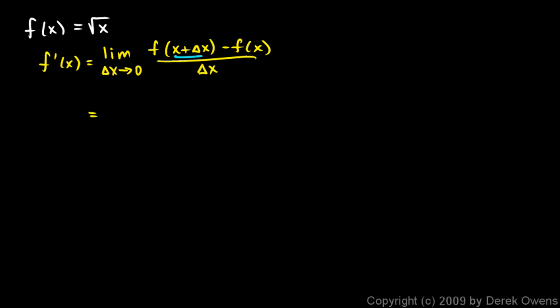What's f of x plus delta x? Well, I need to take x plus delta x and stick it in for the variable x. So this is going to be the limit as delta x approaches zero of f of x plus delta x, and that's going to be the square root of x plus delta x. Then we have minus f of x, which is simply the square root of x.